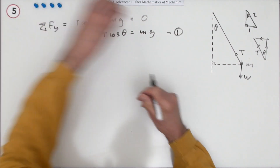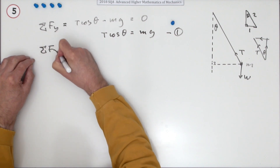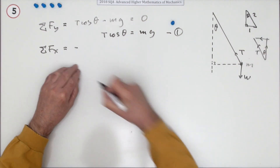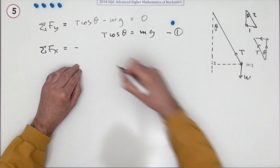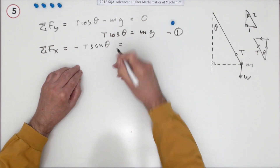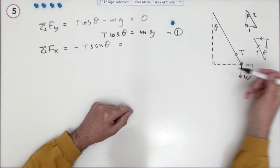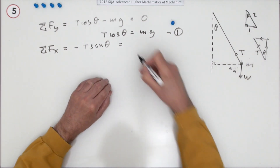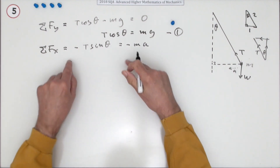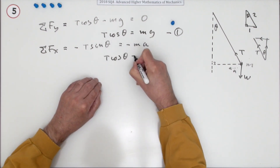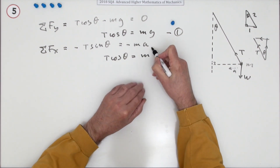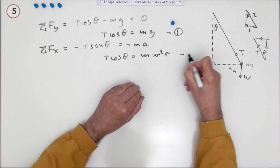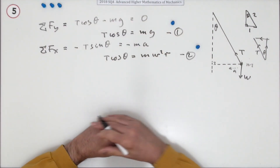What about the sum of the forces in the x-direction? There's only the one component: negative T sinθ. That's the only component, and it produces an acceleration in that direction. Calling that the acceleration, that's also negative, so negative m times a — the negatives cancel. Using the circular motion form instead of a, that gives T sinθ = mω²r. That's equation two and the second mark.